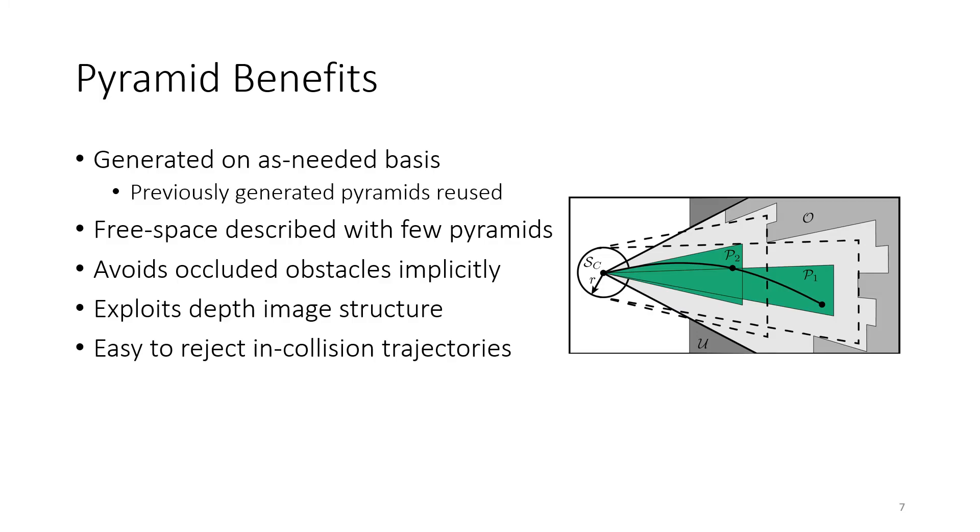There are many reasons that we want to use these rectangular pyramids for collision checking. Firstly, we can generate them on an as-needed basis. This means that as we go we can generate pyramids when we need them and then reuse those for future collision checks. So for example, if we're flying down a hallway that's very simple, perhaps we only need to generate one or two pyramids.